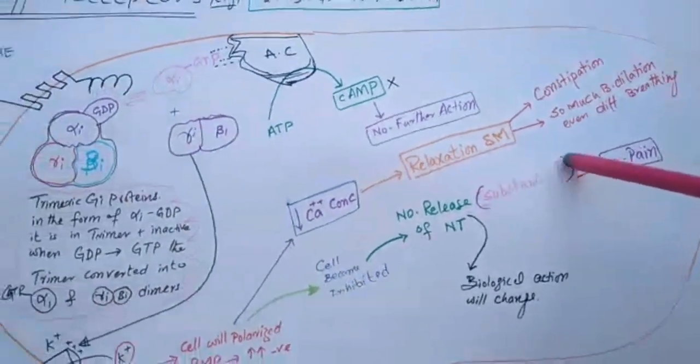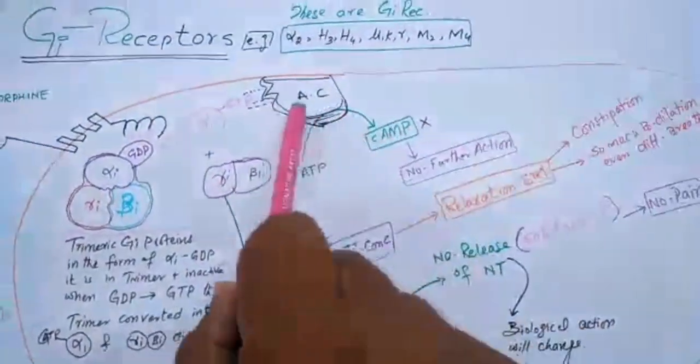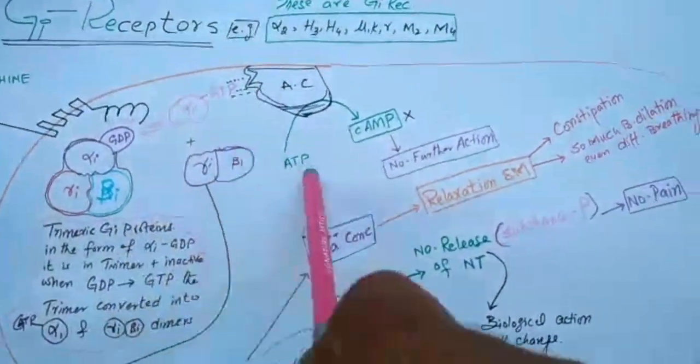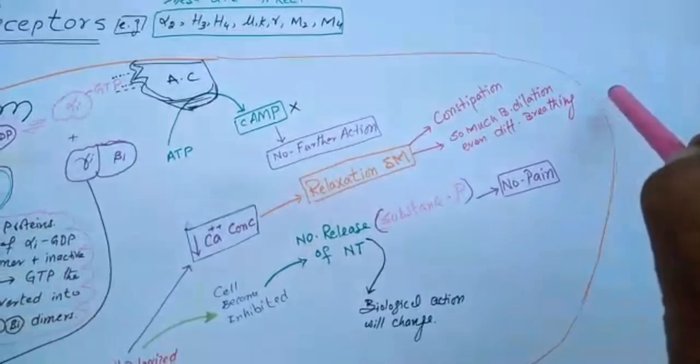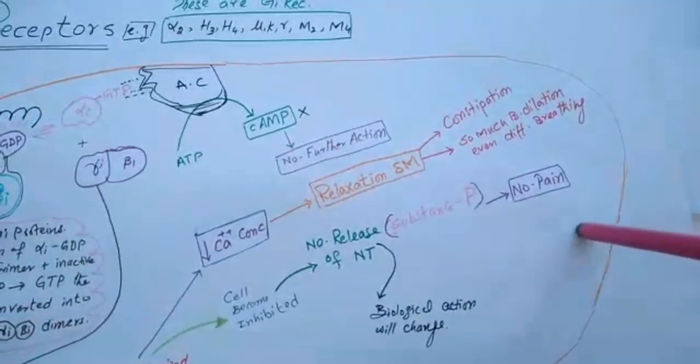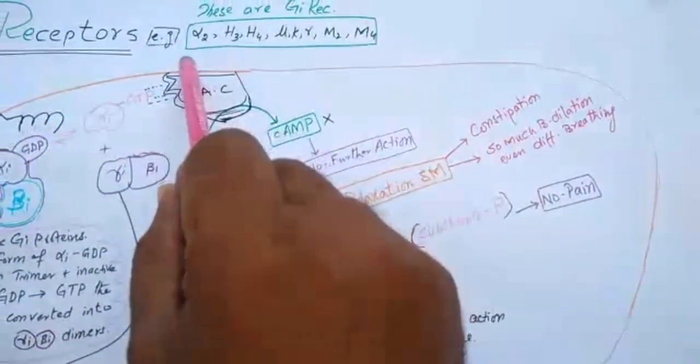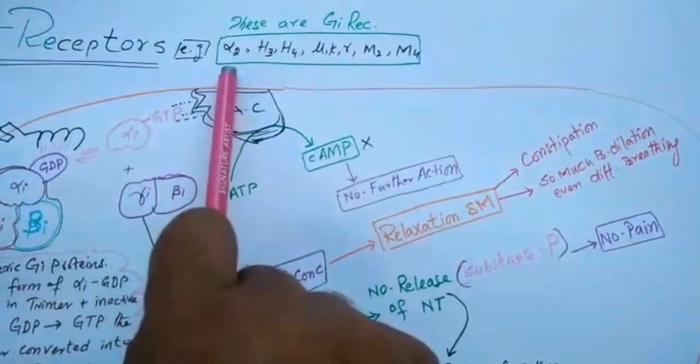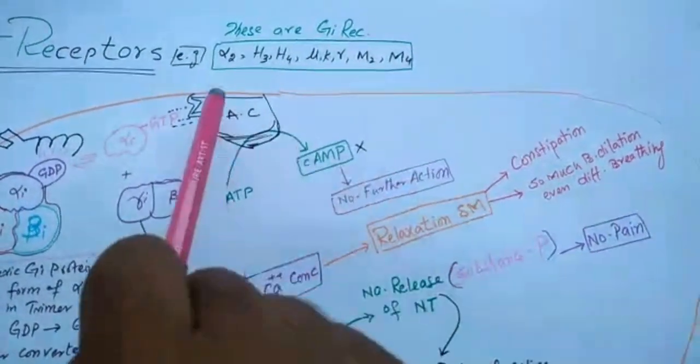Similarly, in case of alpha-2, alpha-2 receptors are present at the nerve endings to control the release of neurotransmitter. This is acting as a check-and-balance system to control the release of neurotransmitter. Inshallah, we will discuss...